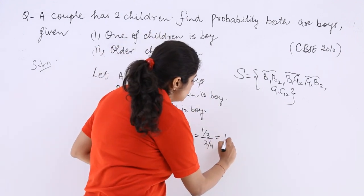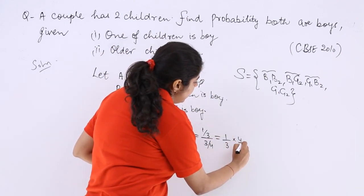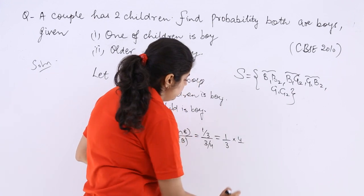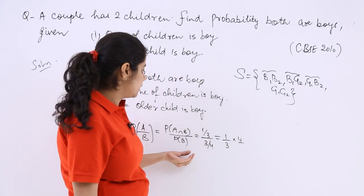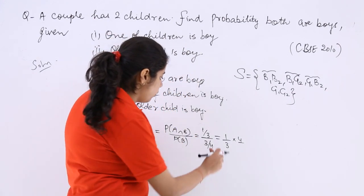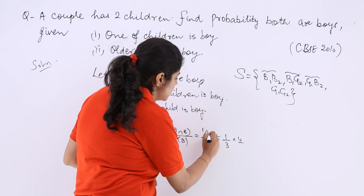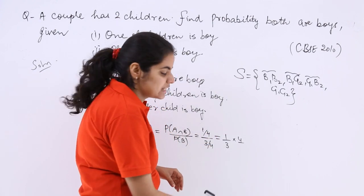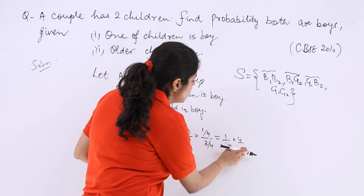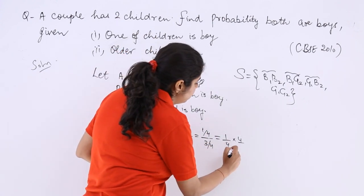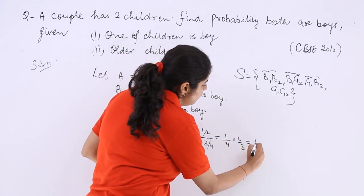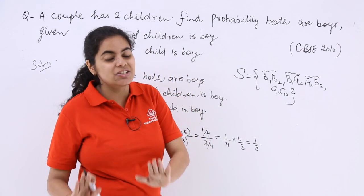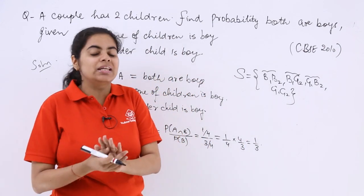So P(A|B) = (1/4) / (3/4) = 1/3. That is the answer to the first part.